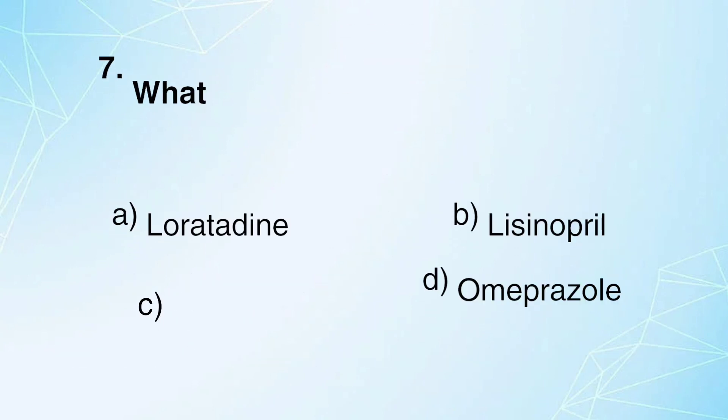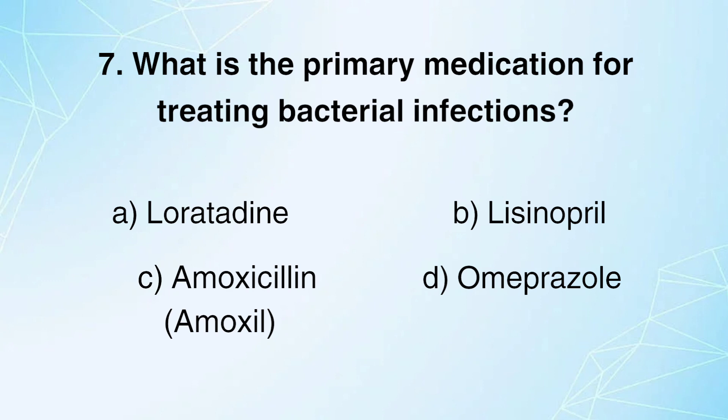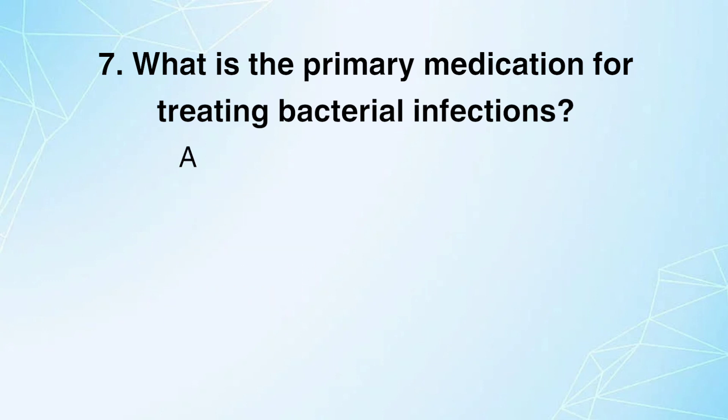What is the primary medication for treating bacterial infections? A. Loratadine. B. Lisinopril. C. Amoxicillin (Amoxil). D. Omeprazole. Answer: C.